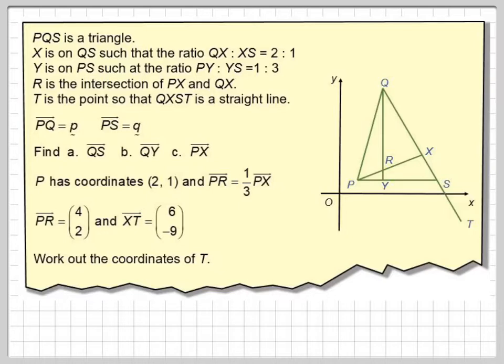PY to YS is 1 to 3. R is the intersection of PX and QY. T is the point so that QXST is a straight line. The vector PQ is p, and the vector PS is q.